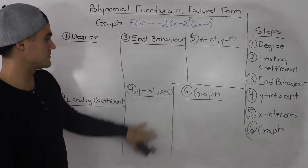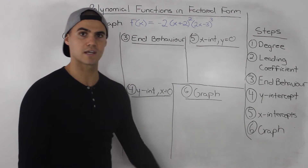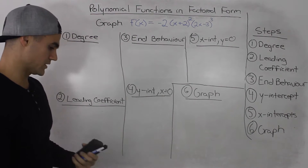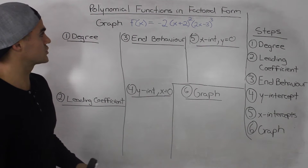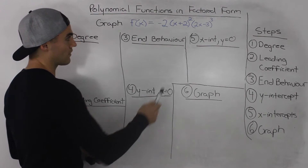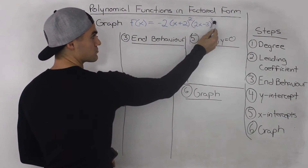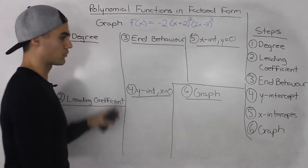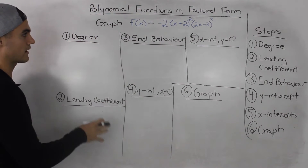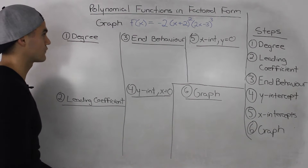I kept the same template for these 6 steps that we've been using in previous videos for graphing. What's unique about this polynomial function that we haven't graphed yet is that this bracket is to the power of 2 and this bracket is to the power of 3. We're going to go through the same steps and you'll see how these brackets affect each step and finally how they affect the graph.